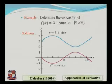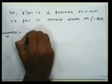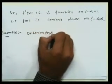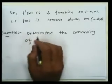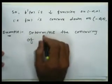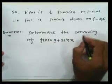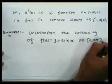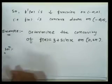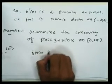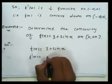Example: Determine the concavity of f(x) = 3 + sin x. We will use the second derivative test for concavity to solve this example. Now f(x) = 3 + sin x, so f'(x) = 0 + cos x = cos x, and f''(x) = -sin x.